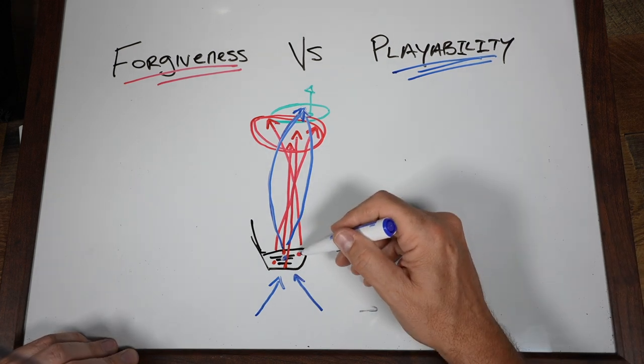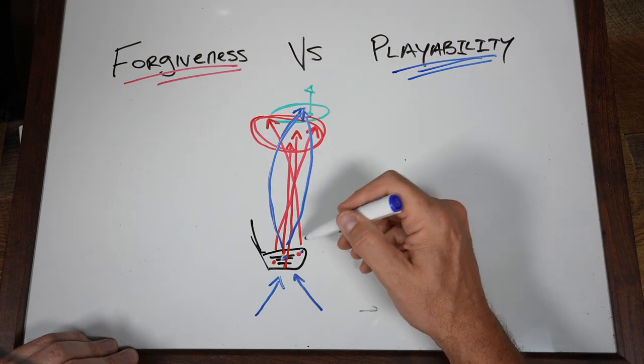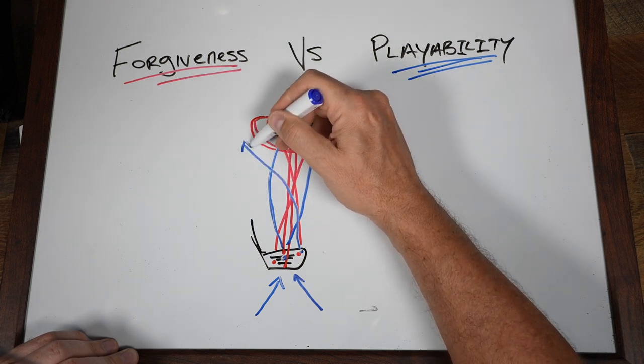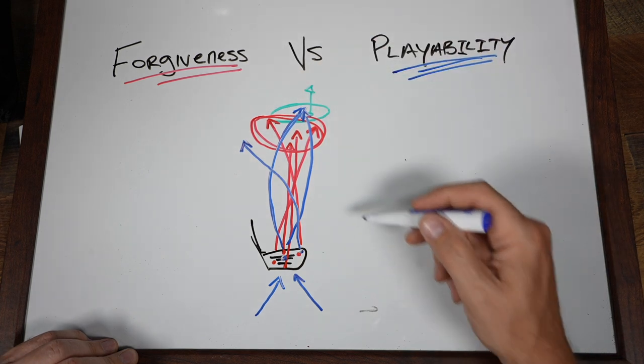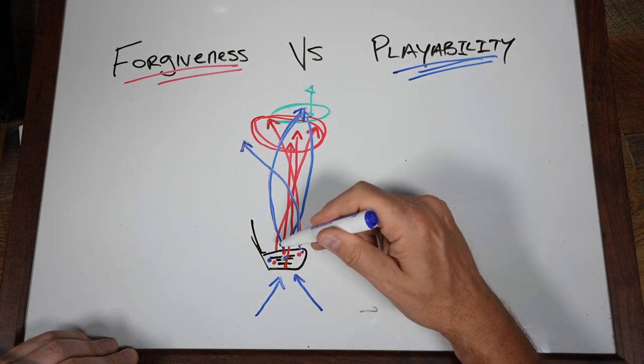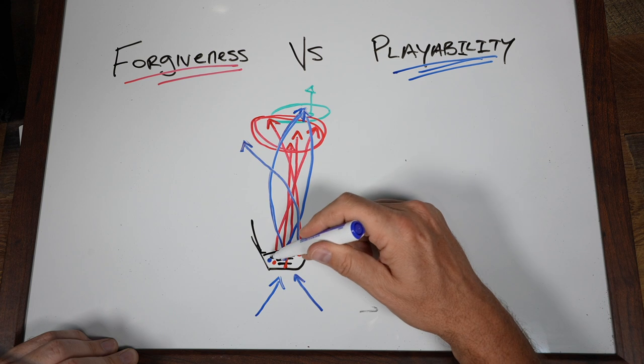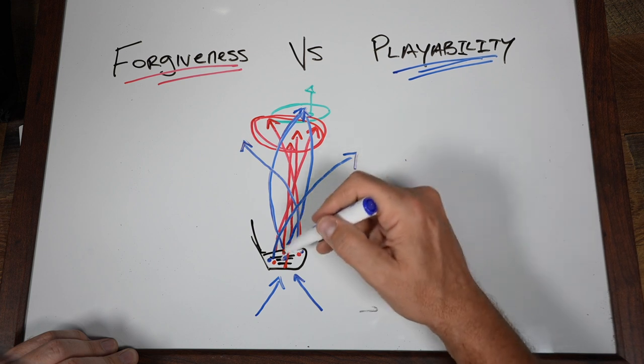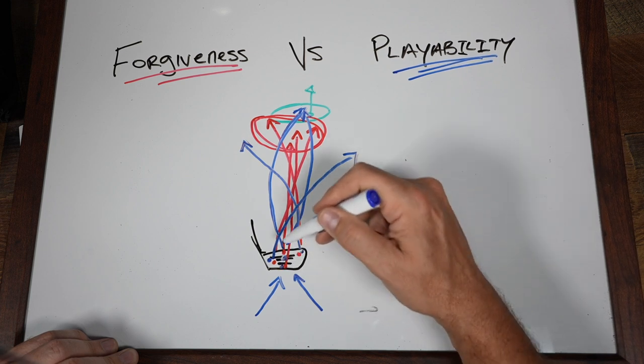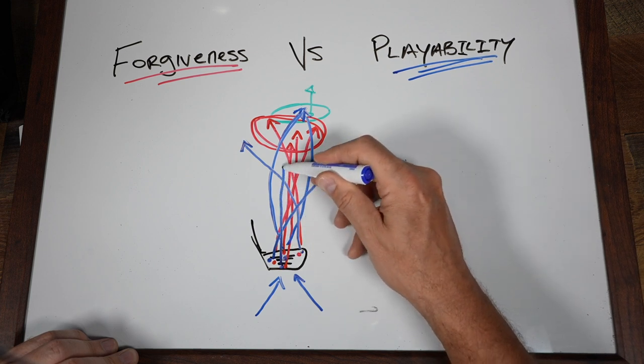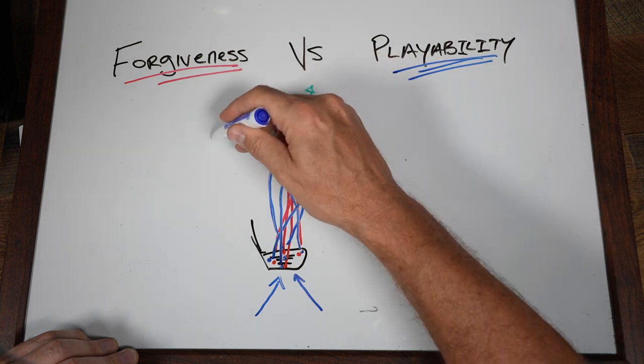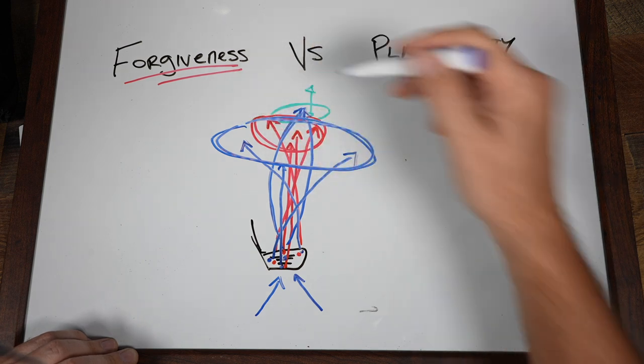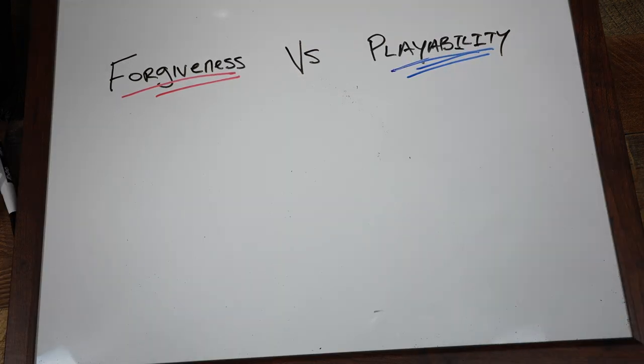But if I hit that same shot towards the toe, I'm going to get that curvature but I might come up considerably short here. I might hit that ball towards the hosel, hit that hosel rocket and it's going over here. I hit that ball a little thin on the club face and it's coming up well short. Now my dispersion here is much more significant.